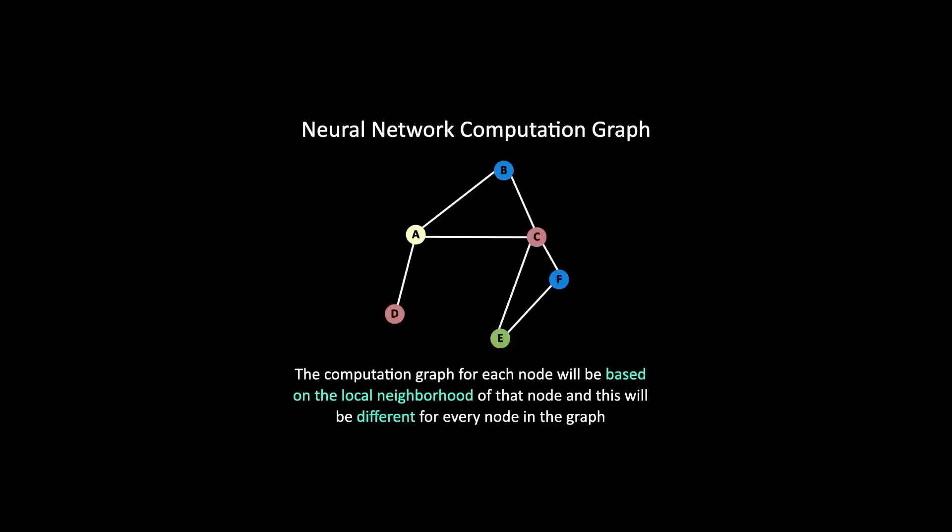In a graph neural network, for every layer of the GNN, a different computation graph is created for each node in the original graph structure. This computation graph is based on the local neighborhood of that node, and this is different for every node in the graph because every node is connected to a different set of neighbors.